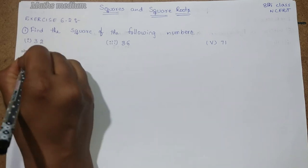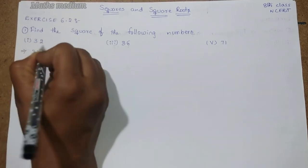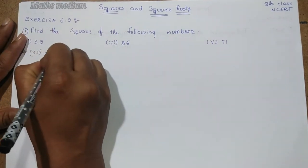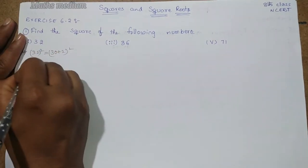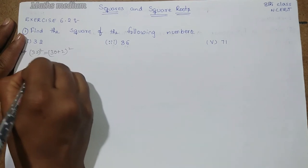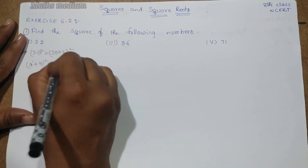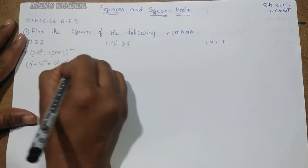Now coming to 32, we have to find 32 square. We can write it as 30 plus 2 whole square. This is in the form of a plus b whole square. What is the formula of a plus b whole square? a square plus b square plus 2ab.